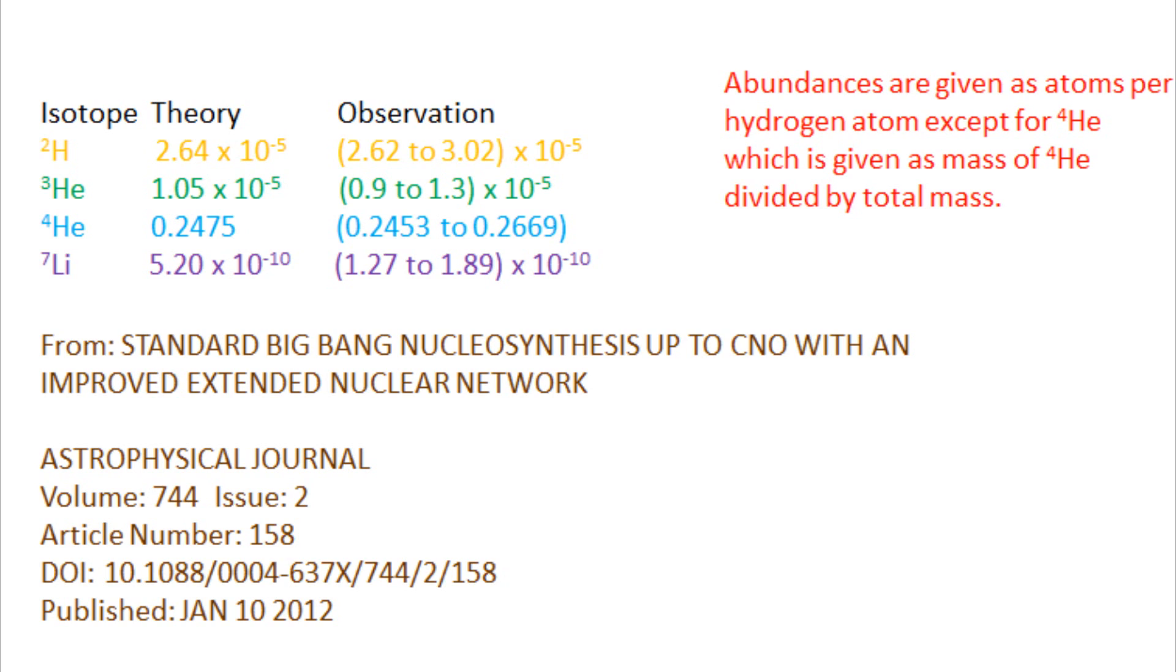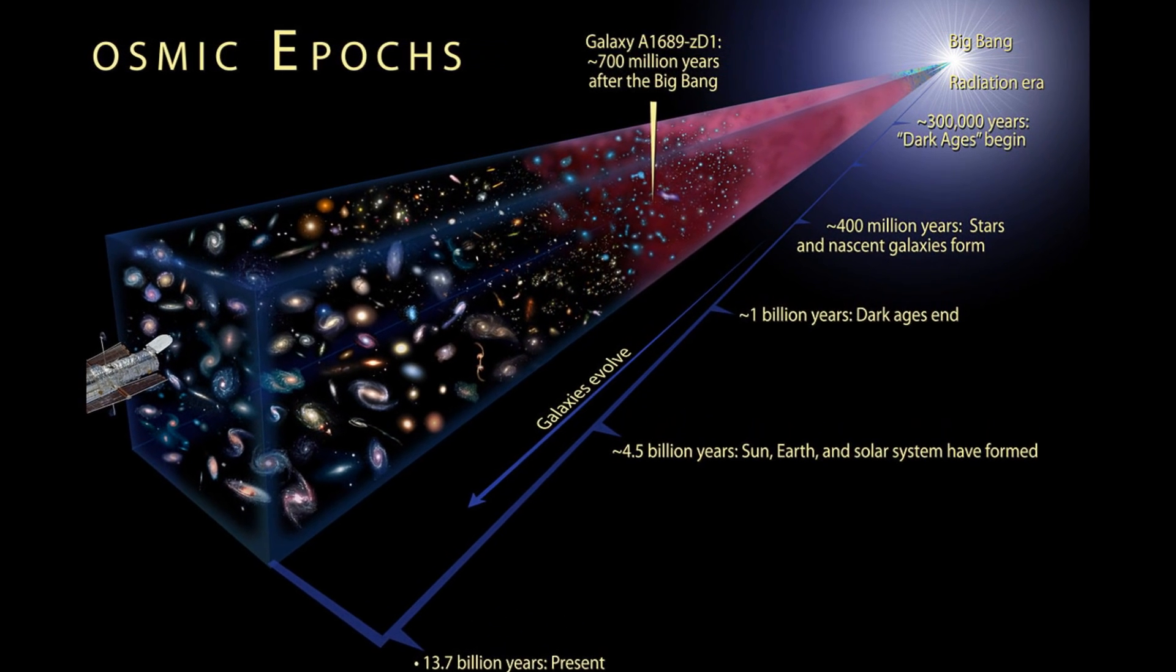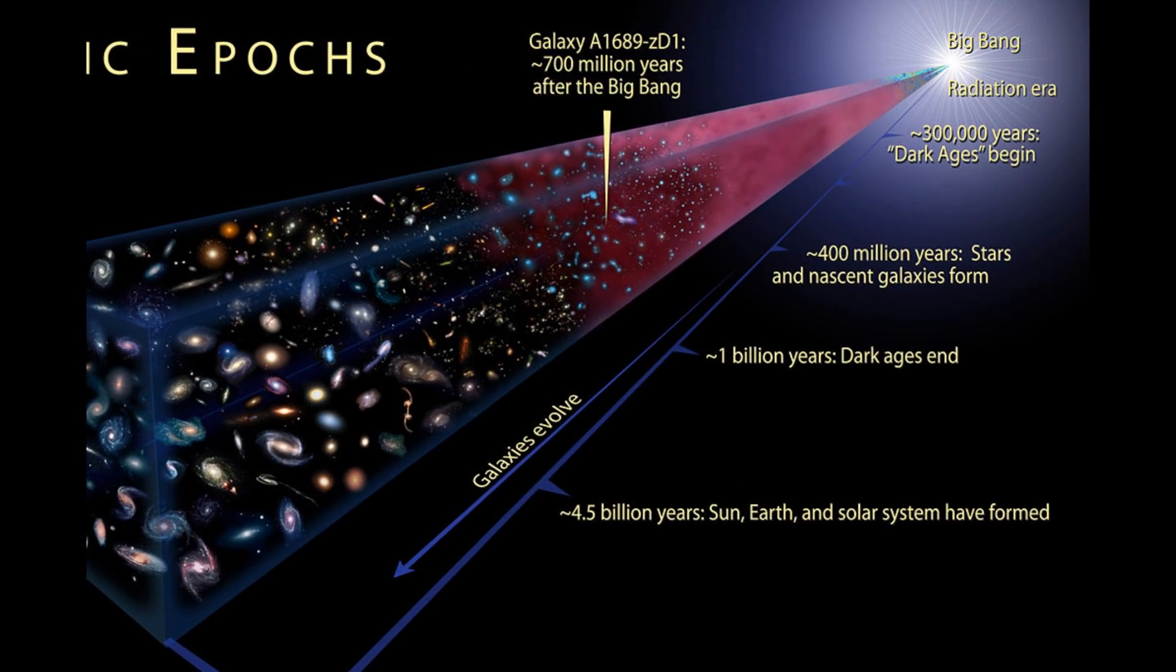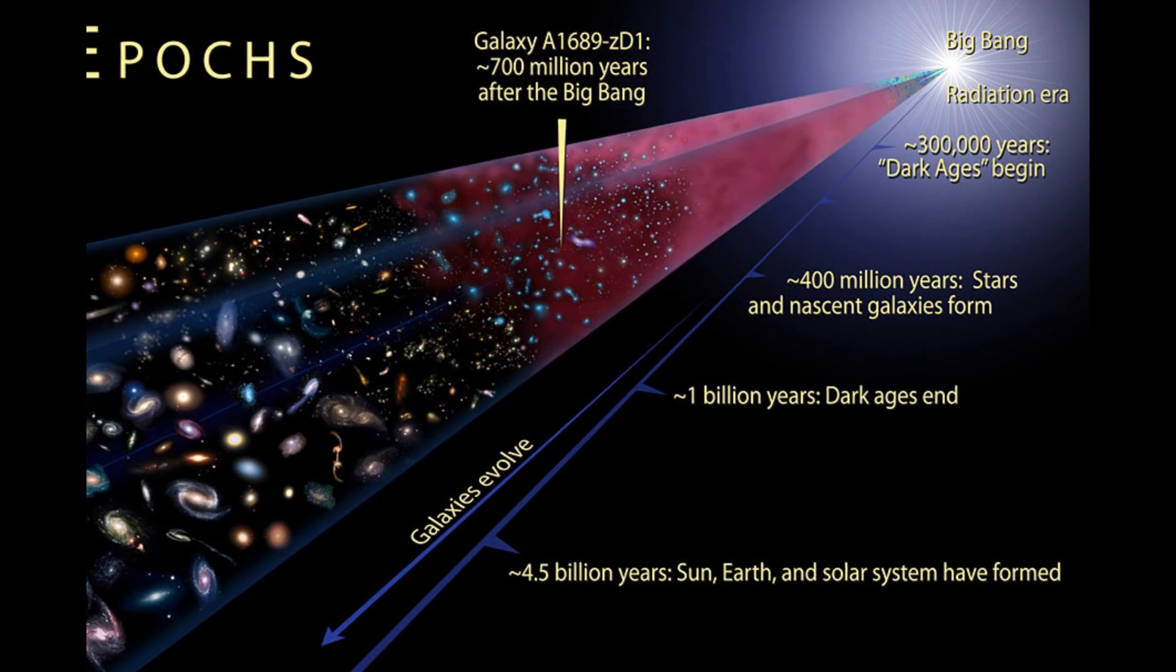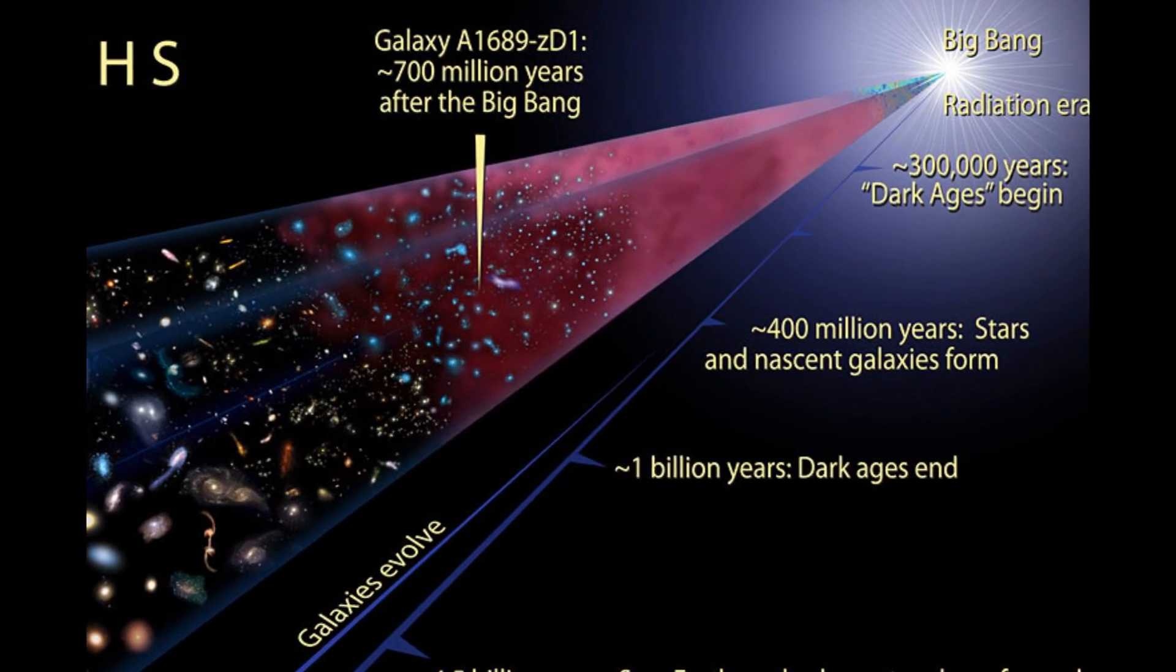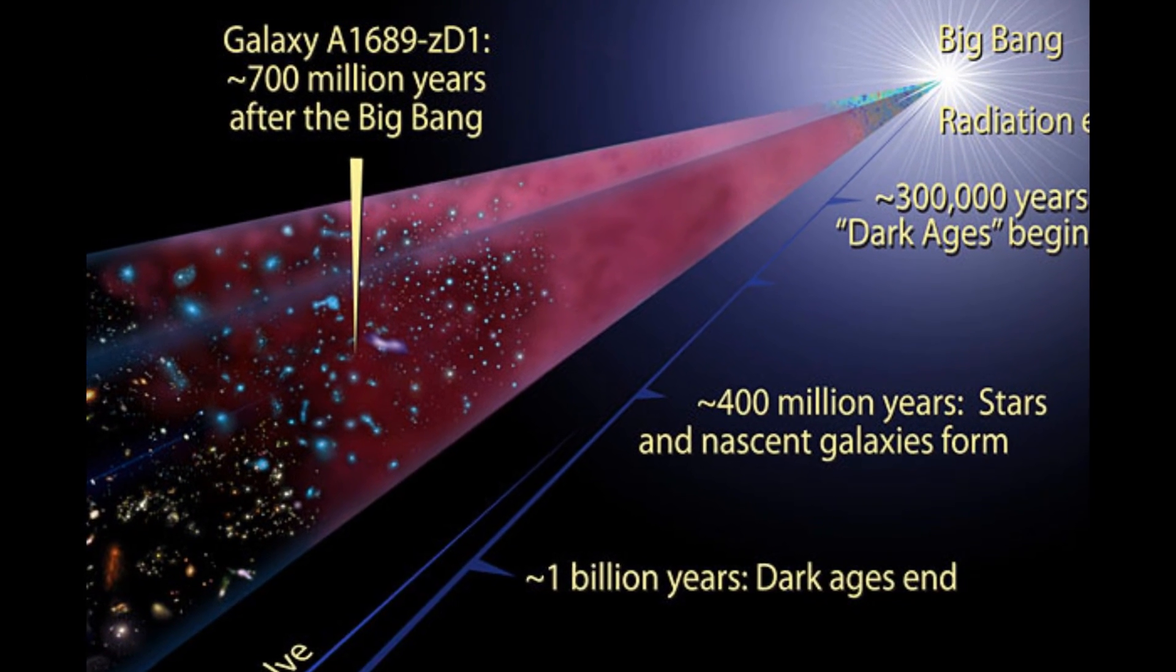That is, the Big Bang predicts that the primordial lithium-7 abundance will be something times 10 to the negative 10, and observations show that it is something times 10 to the negative 10. It's important to appreciate how truly remarkable the comparison to Big Bang nucleosynthesis predictions to observations really is. We have correctly deduced the outcome of a process that lasted less than 20 minutes and took place almost 14 billion years ago.